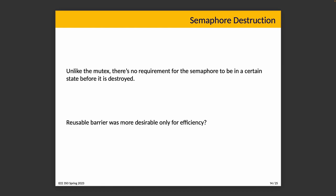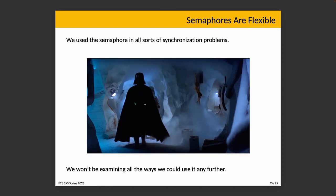We use the semaphore in all sorts of synchronization problems. We could use it in place of a mutex, use it to arrange a rendezvous, allow limited concurrency with multiplex, or use its internal value indirectly in producer-consumer problems to track the number of items and spaces in the buffer. However, we aren't going to examine additional ways to use the semaphore at this point — the focus in this course is reviewing it so we can get on to implementing these constructs.